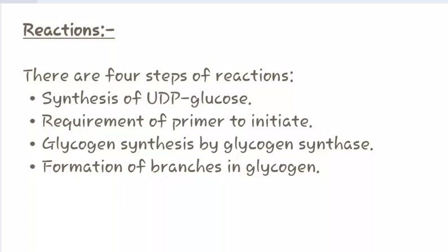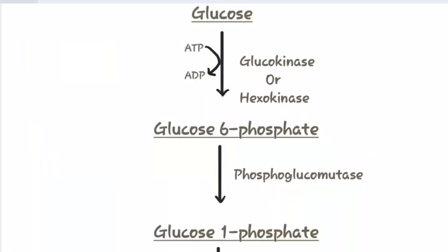There are four steps of reaction. First is synthesis of uridine diphosphate glucose. Second is requirement of a primer to initiate glycogenesis. Third is glycogen synthesis by glycogen synthase. And the last step is formation of branches in glycogen.